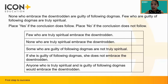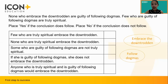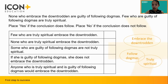Decision-making questions love to trip you up with tongue-twisting and brain-twisting sentences that are sometimes downright nonsensical. The best way to tackle this type of question is by drawing a Venn diagram. From the given information, there should be no intersection between 'embrace the downtrodden' and 'follow dogmas', and a small intersection between 'follow dogmas' and 'truly spiritual'. It is unknown whether 'embrace the downtrodden' and 'truly spiritual' intersect, so we put 'no' for both the first and second conclusions.